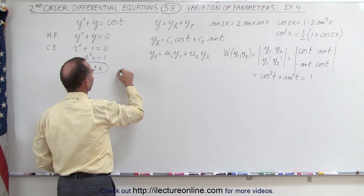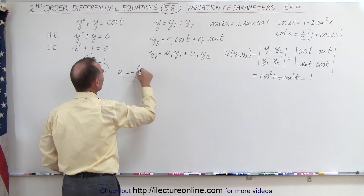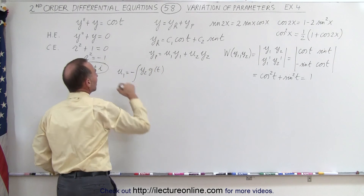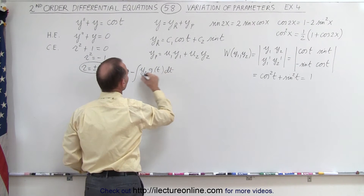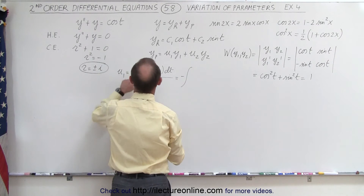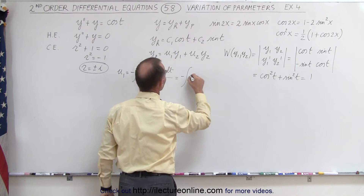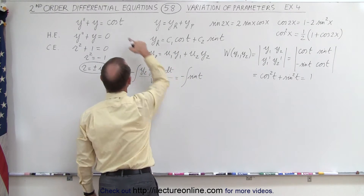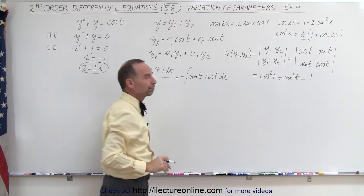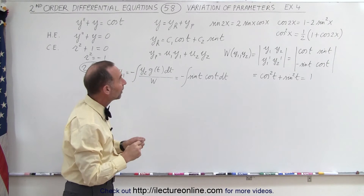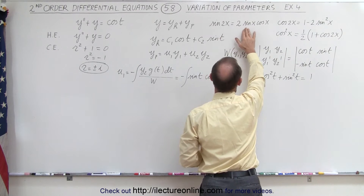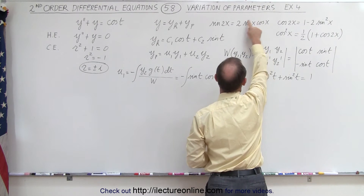Now we find u1. u1 is equal to the negative integral of y2 times g of t, which is the cosine of t, times dt divided by the Wronskian, which is 1. So this is equal to the negative integral of y2, which is sine of t, times g of t, which is cosine of t, times dt. Now we need to integrate that. I've put some trig identities up there: the sine of 2x equals twice the sine of x times the cosine of x, and we're going to use this identity.